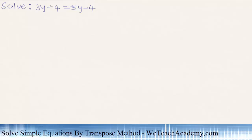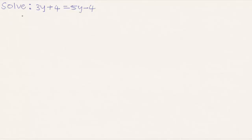Welcome to vteachacademy.com. In this presentation we are going to solve simple equations by the transposing method. Our first problem is: solve 3y plus 4 equal to 5y minus 4. Let us bring all the variable terms to one side.